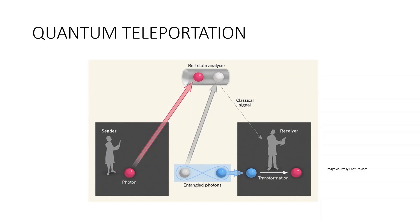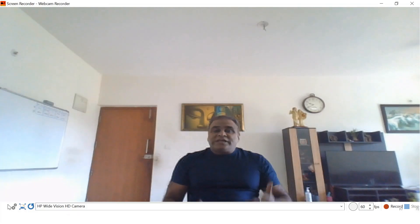Quantum teleportation is a process in which quantum information can be transmitted from one location to another with the help of classical communication and previously shared quantum entanglement between the sending and receiving location. Quantum information means the exact state of an atom or photon. Quantum teleportation depends on classical communication, which can proceed no faster than the speed of light. It cannot be used for faster-than-light transport or communication of classical bits.